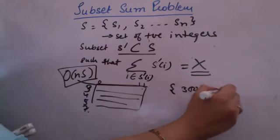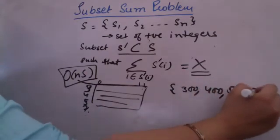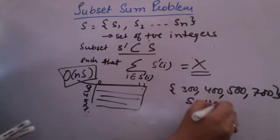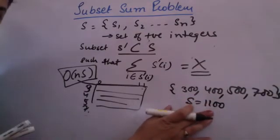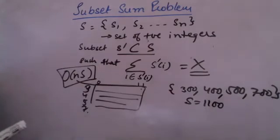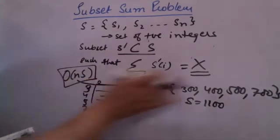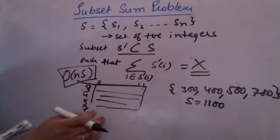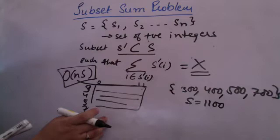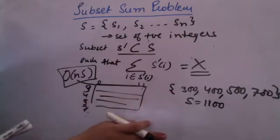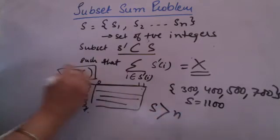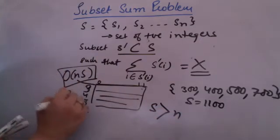Suppose the numbers were 300, 400, 500, and 700, and the sum we are looking at is 1100. To find the solution, we would have to create 1100 columns just for four items in the set. This is not a good technique. So if the sum is very large compared to N, dynamic programming is not giving a good answer.